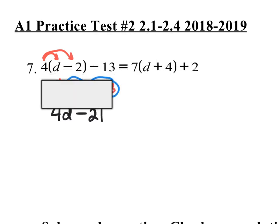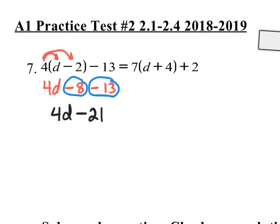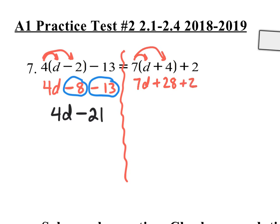Now I'm going to simplify the right side. Instead of the rectangle, it's always a good idea to just draw a little separation line because the equal sign is what truly divides the equation into two sides. So let's distribute on the right side: 7 times d is 7d, 7 times 4 is 28, bring down the plus 2. I'm going to combine the terms that are alike — the 28 with the 2. You can't combine donkeys with numbers. 28 plus 2 is 30. So we have 7d and positive 30.